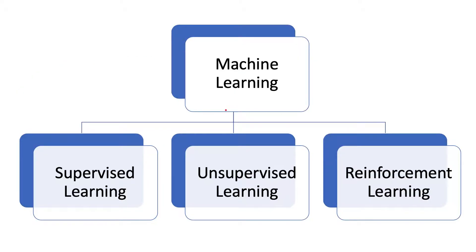Machine learning is categorized into three main categories: supervised learning, unsupervised learning, and reinforcement learning. Nowadays the semi-supervised learning term is also popular, but for the sake of simplicity we will stick to these three main branches.